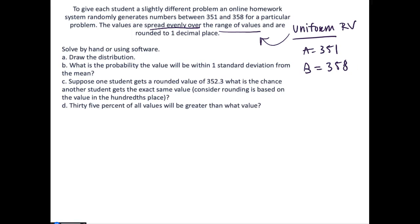So if we want to draw the distribution of this random variable, it's going to be from 351 to 358 and it looks sort of like a box because we have a uniform probability.